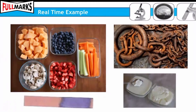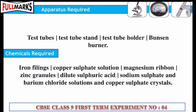Real-time examples of chemical processes include: rusting of iron in air, preparation of food, and milk turning to curd. Apparatus required: test tubes, test tube stand, test tube holder, and Bunsen burner.